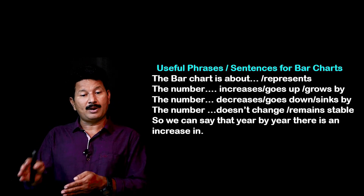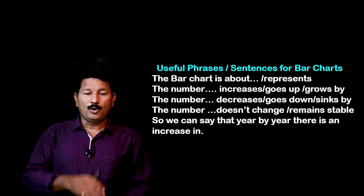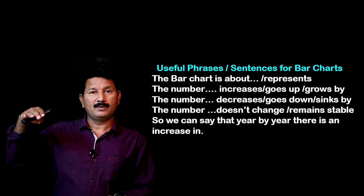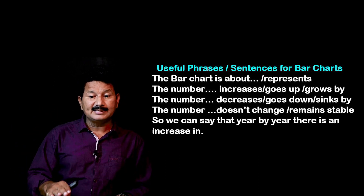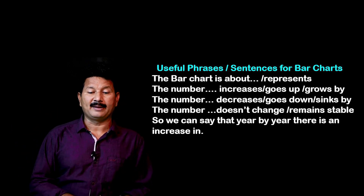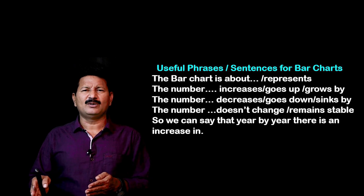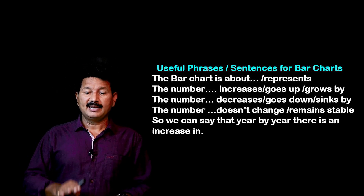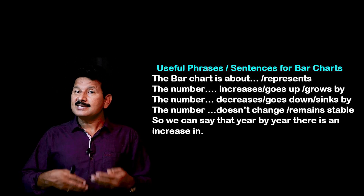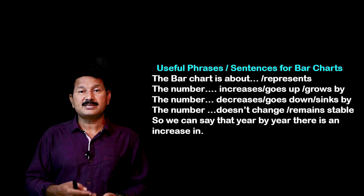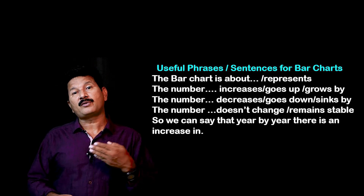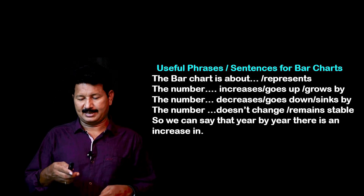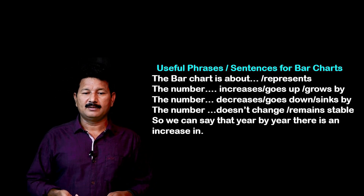For bar charts, useful expressions include: 'the bar chart is all about,' 'the number increases or grows up or grows by,' 'the number decreases or goes down or sinks by,' and 'the number doesn't change or remains stable.' You can say 'year by year there is an increase.' These are expressions to use in addition to those used in the pie chart section.